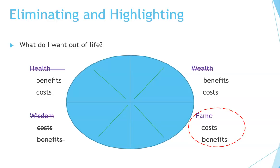You can eliminate and narrow down even further. Let's say you just want to choose one topic — take out health and focus on fame. You're going to talk about the cost and the benefits of fame. This helps you focus and narrow your topic to something more manageable for a shorter paper.